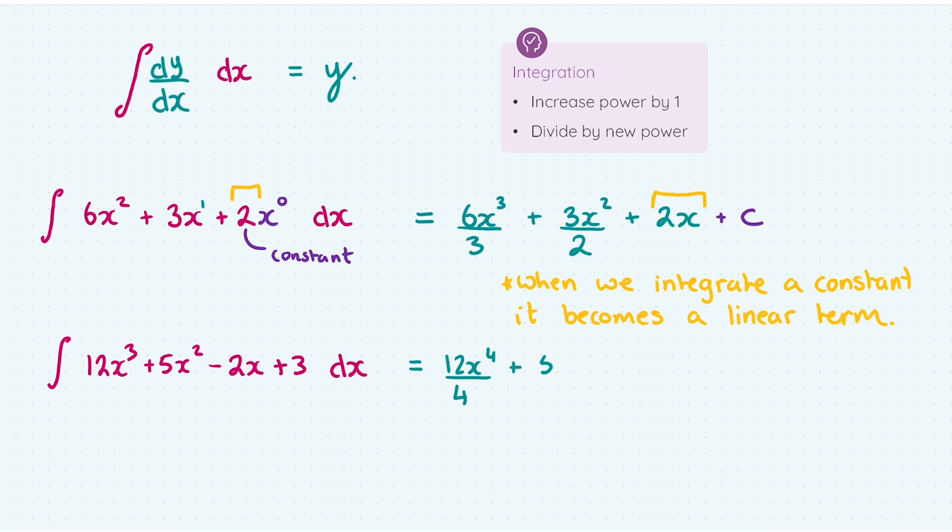For 5x², I increase the power to cubed and I divide by the new power three. For -2x, I increase the power by one. So that becomes x² I divide it by two. And the plus three at the end, we know is a constant. So it's just going to become a linear term. It's going to become 3x. And then I add my plus C here for the constant of integration.